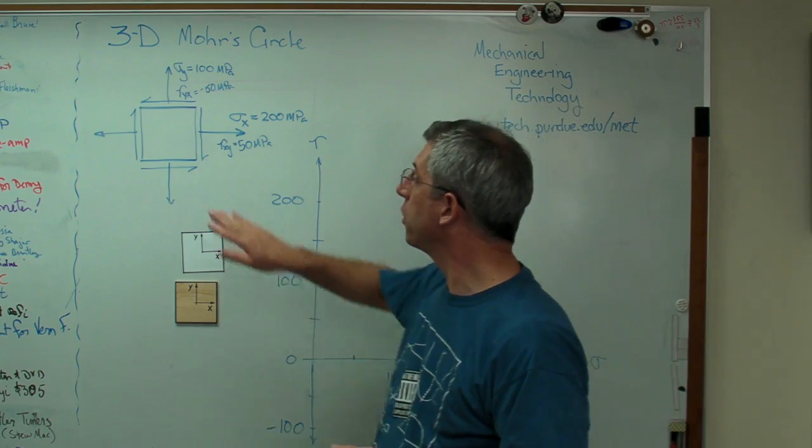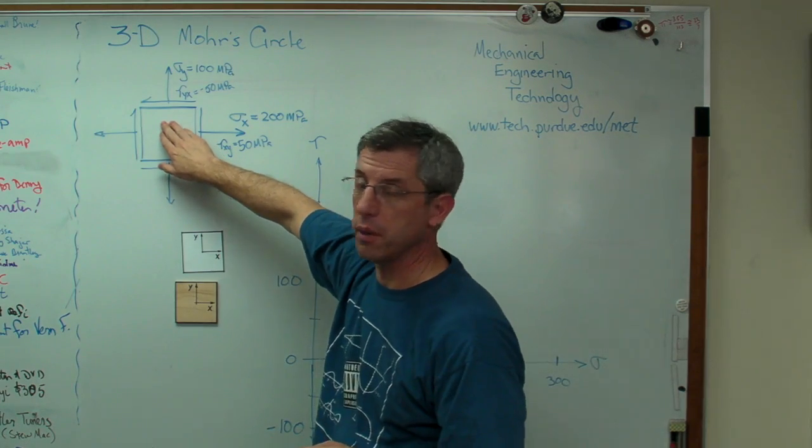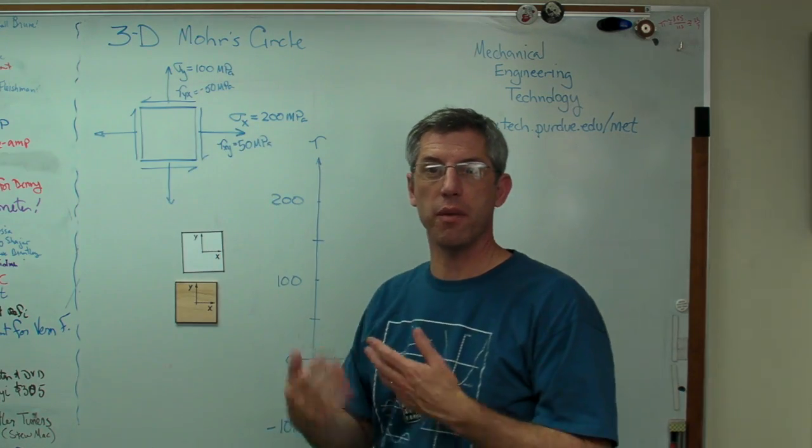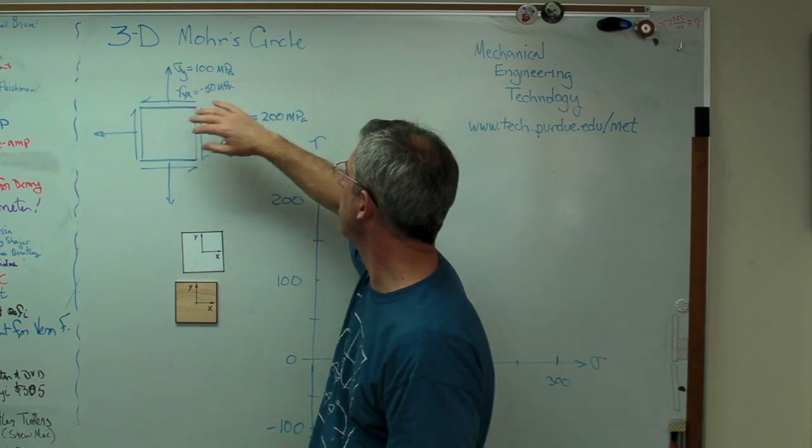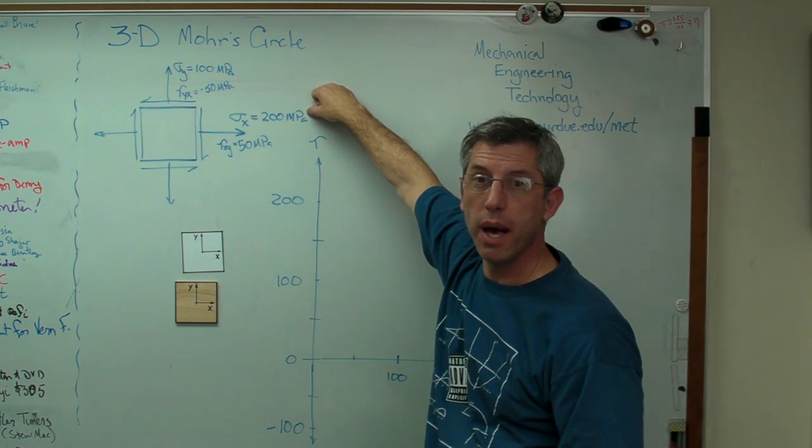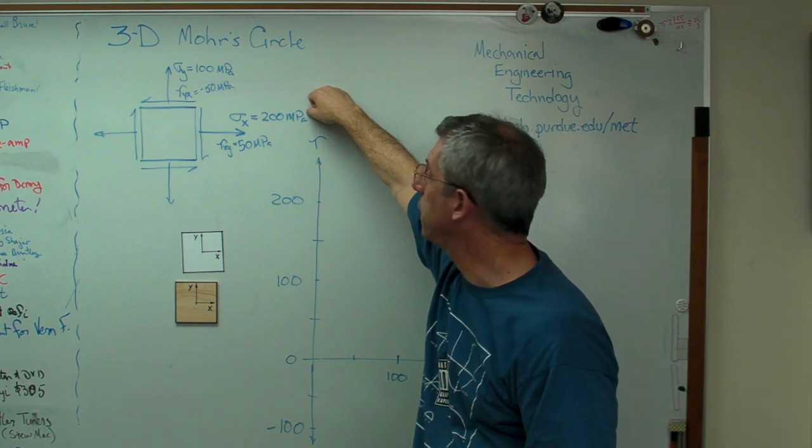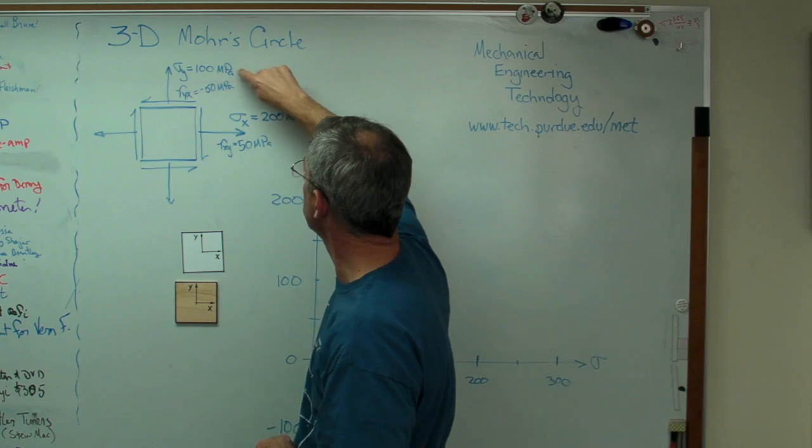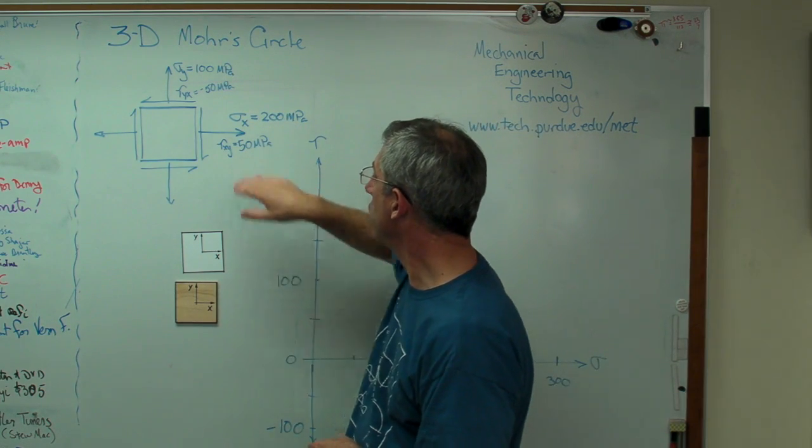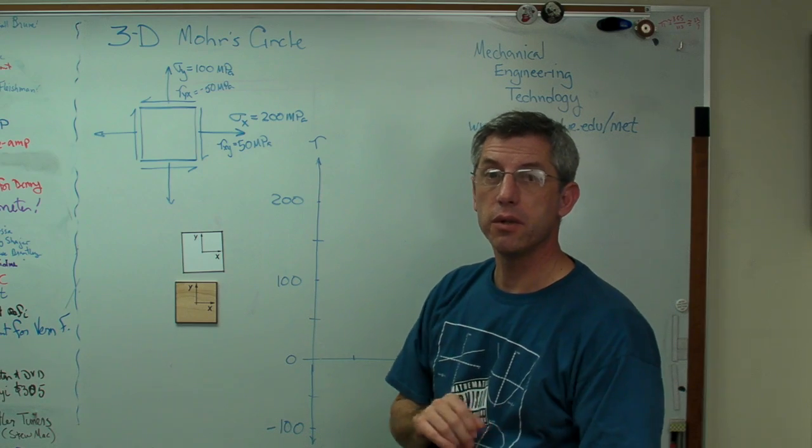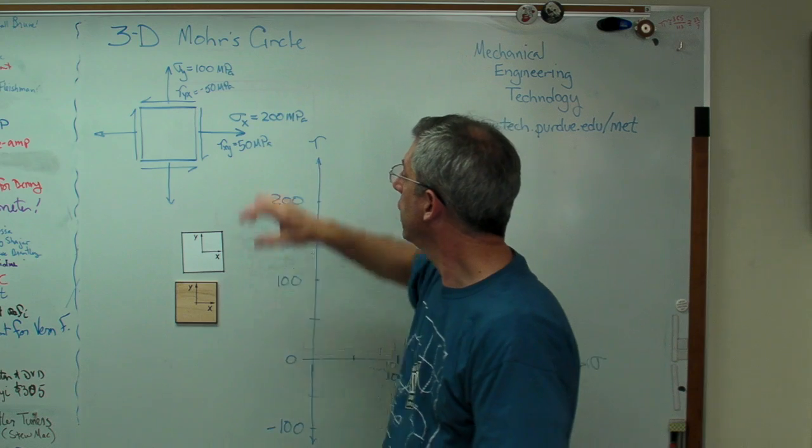If you remember, in order to draw Mohr circle, you have to have a stress element. So I'm going to use this for my stress element. Let's assume these numbers came from some calculation somewhere. We don't have time to do that, so I just wrote the numbers down. Sigma x, the stress on the x-face of the stress element, is 200 MPa. The normal stress on the y-face is 100 MPa. The shear stress on the x-face is 50 MPa.